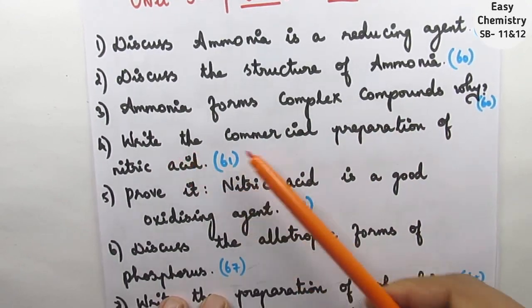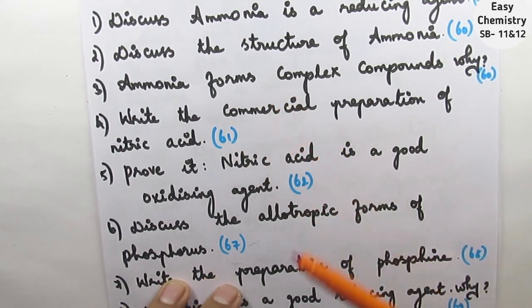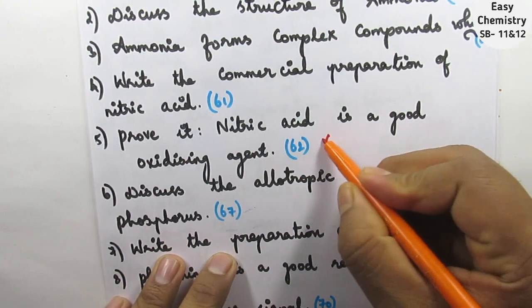Question number 4: write the commercial preparation of nitric acid. This is very important. Question number 5: prove it, nitric acid is a good oxidizing agent. This is very important question.